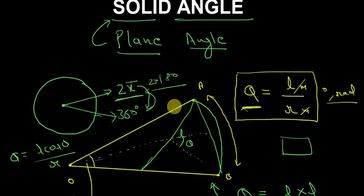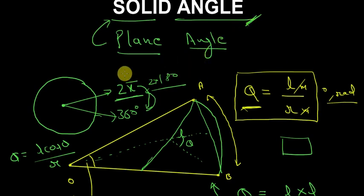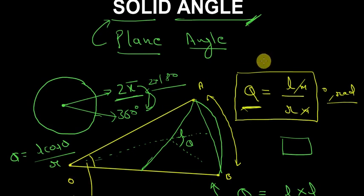So now you know everything you need to know about what a solid angle is. It is just the surface version of the plane angle. We need this in Gauss's law in electrostatics and many other places where we need the angle subtended by a surface — essentially how the surface extends in space as viewed from a single point, which gives us electric flux and more.